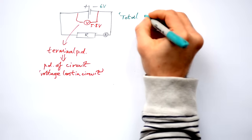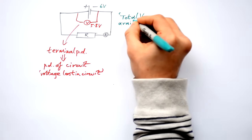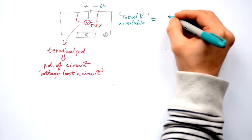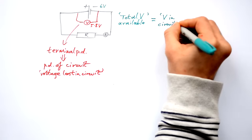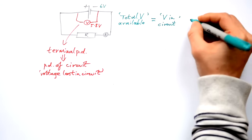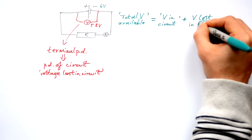So it's as simple as saying this, I'm going to put this in inverted commas. Total V available is actually going to be equals to the voltage in the circuit or the voltage lost in the circuit, plus the voltage lost in the battery.